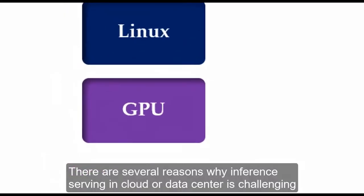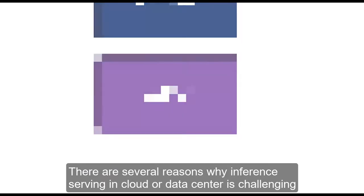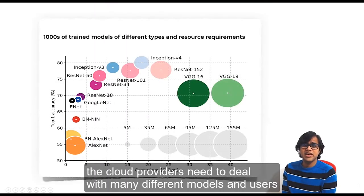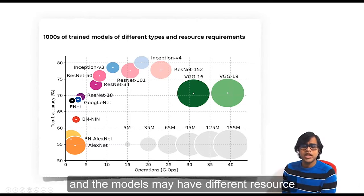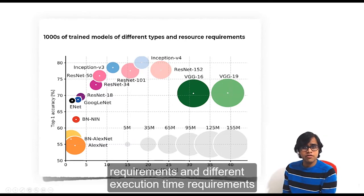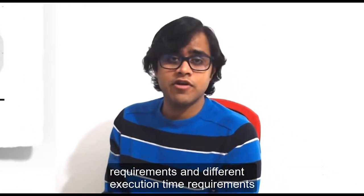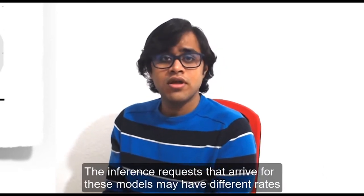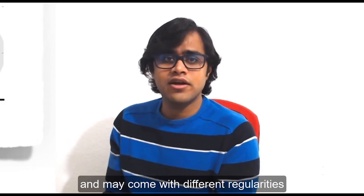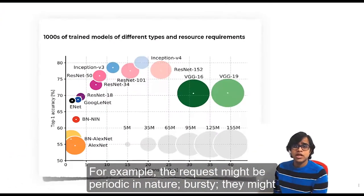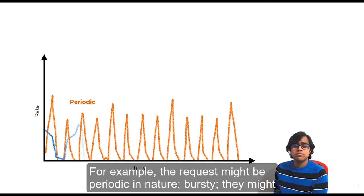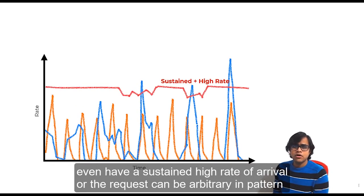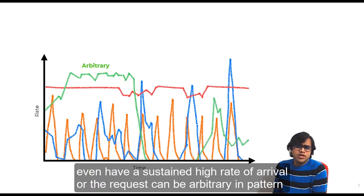There are several reasons why inference serving in cloud or data center is challenging. Cloud providers need to deal with many different models and uses, with different resource requirements and execution time requirements. The inference requests may have different rates and come with different regularities. For example, the requests might be periodic in nature, bursty, have sustained high rates, or arbitrary patterns.